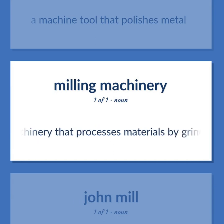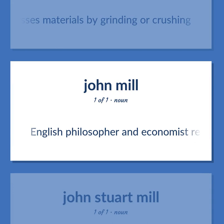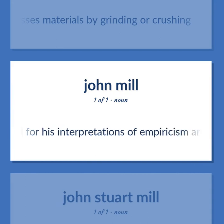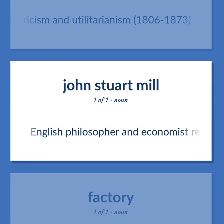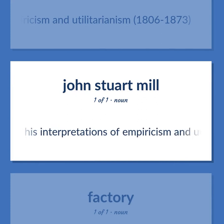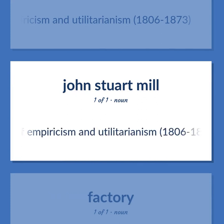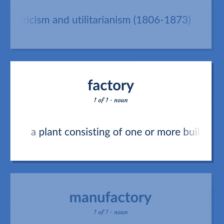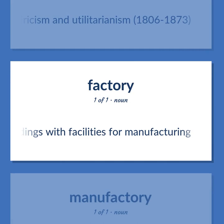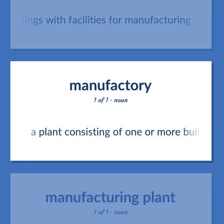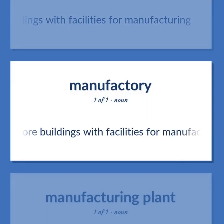Mill: Machinery that processes materials by grinding or crushing. John Stuart Mill — English philosopher and economist remembered for his interpretations of empiricism and utilitarianism, 1806 to 1873. A plant consisting of one or more buildings with facilities for manufacturing.